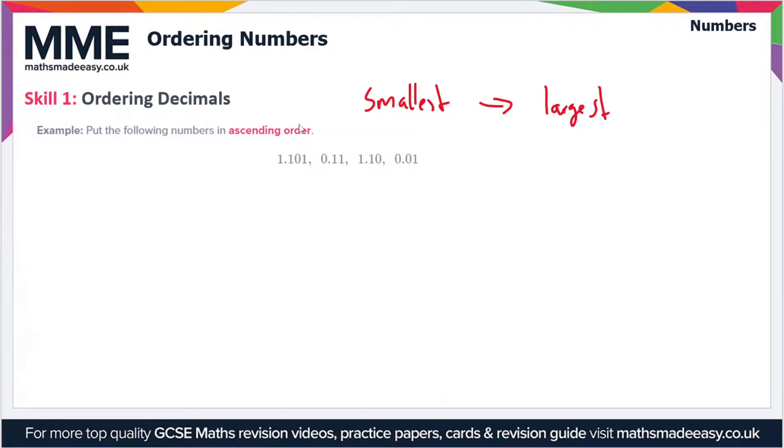So the first digit in the first number is a one, and then if we look at the second number the first digit is zero, so we can immediately rule out the first one. The third one also has a one as the first digit, so we're considering the second and the fourth of these numbers. They both have a zero, so we move on to the second digit. And here we have a one and here we have a zero, so 0.01 is the smallest.